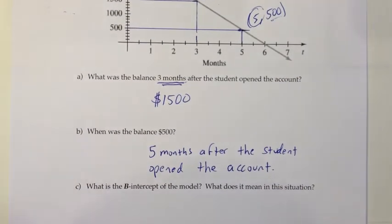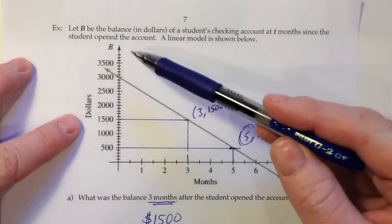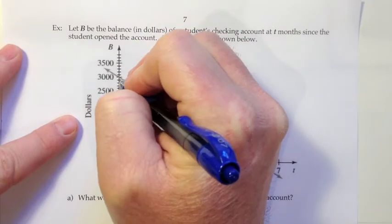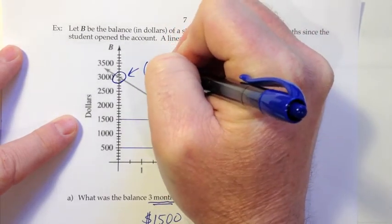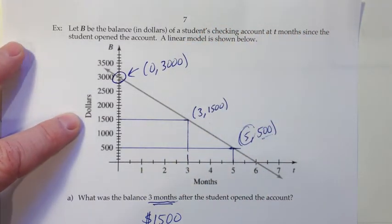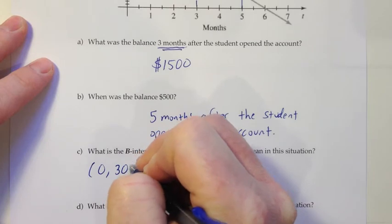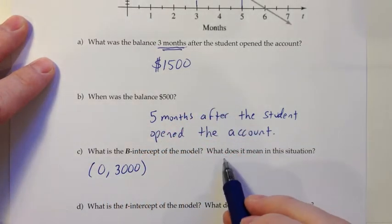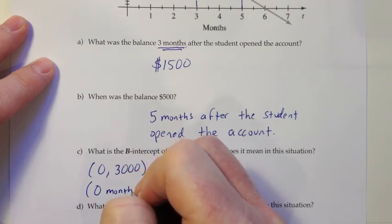Alright, let's see what else they have for us here. What is the b-intercept of the model, and what does it mean in this situation? So, according to what we did in previous work, the b-intercept should be the place where the model intersects the b-axis. So which of these axes is the b-axis? The b stood for the balance, and that's our vertical axis. So this would be the b-intercept right here. And we have not moved over any time yet, so that would be a 0 for the input, and 3,000 for the output. So that would be the b-intercept just as an ordered pair. So we can write that down here. The b-intercept is (0, 3000). But then it would be good in terms of helping to interpret what does it mean in this situation. It would be good to put units. So that would be 0 months and $3,000.